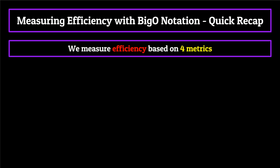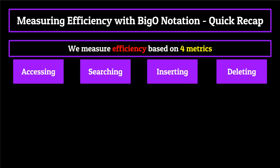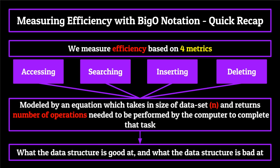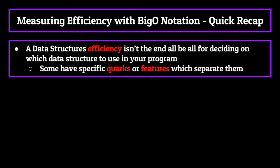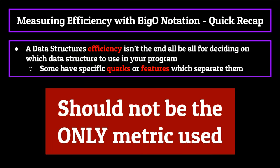To sum up, we measure the efficiency or speed of a data structure based on how well it can perform four basic tasks: accessing, searching for, inserting, and deleting elements within itself. Each of these criteria is modeled by an equation which takes in the size of the data structure in number of elements n, and returns back the number of operations needed to be performed by the computer to complete that task. By measuring these four metrics, we can get a pretty good understanding of what the data structure is good at and what it's bad at. It's important to note that this isn't the end-all be-all for deciding which data structure to use — many of the data structures were structured with specific quirks or features which separate them from the rest. Big O notation is incredibly useful and something you should definitely consider, but it should not be the only thing that you use.